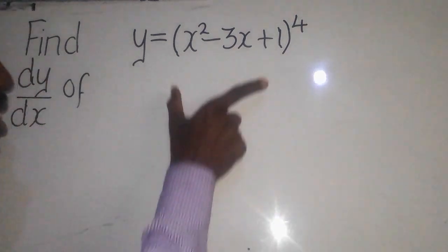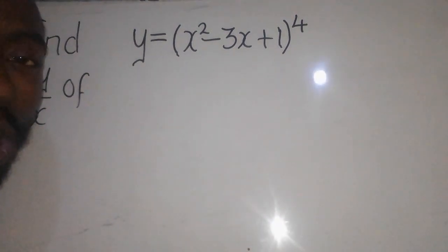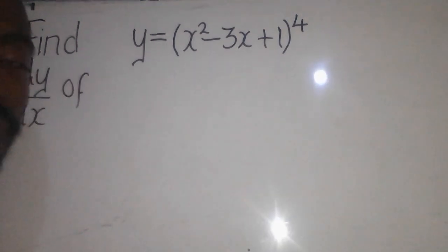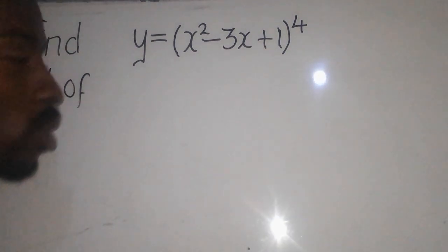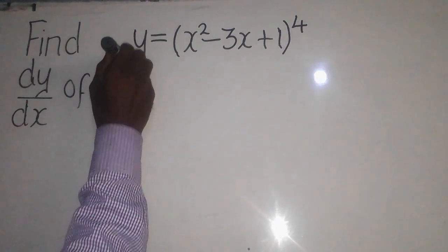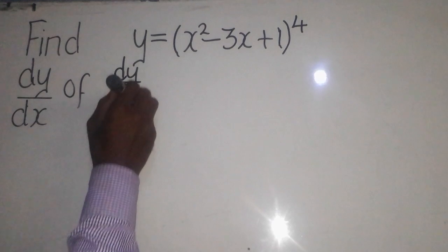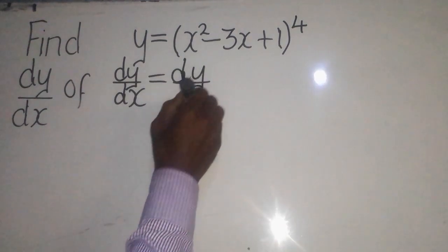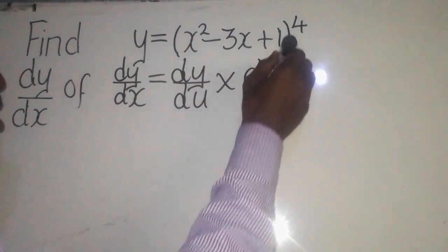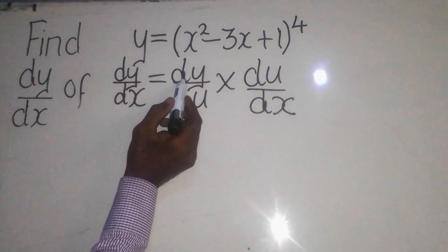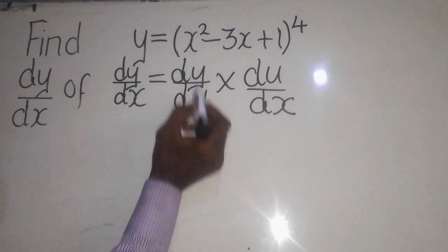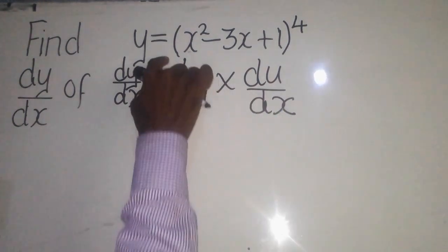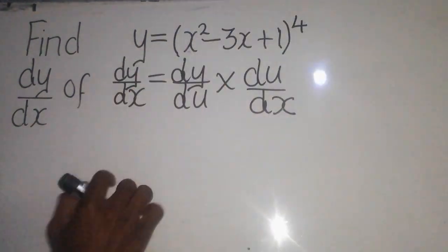You need to understand that this function here is what you call a composite function. Why so? Because it has a polynomial with a greater power. If that's the case, then we have to use the chain rule in order to solve this. The chain rule is given by dy over dx, which is equal to dy over du multiplied by du over dx. This simply means we have to derive with respect to u, and also derive with respect to x, which is everything inside.